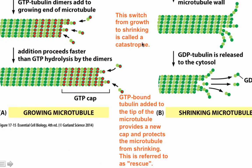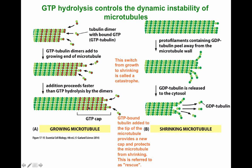This process is reversible. Another GTP dimer can bind to the disassembling microtubule, forming another GTP cap, which induces the elongation of the microtubule again. When GTP tubulin binds and forms a new GTP cap, that cap will induce growth — and we call that rescue. The term dynamic instability refers to the dynamic switch between a catastrophe and a rescue event. The catastrophe allows for shrinking of the microtubule, and the rescue allows for the elongation and polymerization of the microtubule.